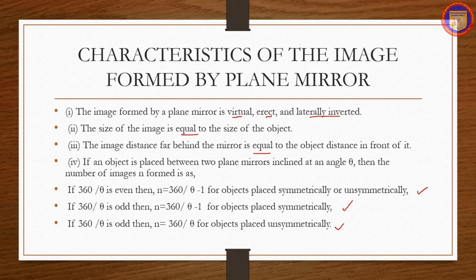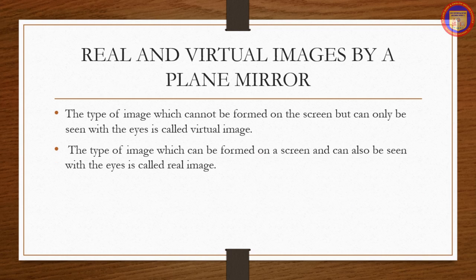Regarding real and virtual images from a plane mirror: the type of image which cannot be formed on a screen but can only be seen with the eyes is called a virtual image. The type of image which can be formed on a screen and can also be seen with the eyes is called a real image.